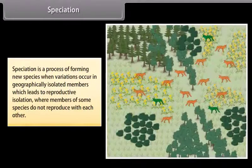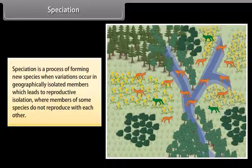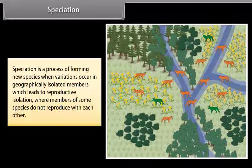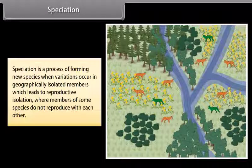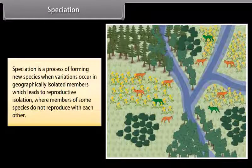Speciation is a process of forming new species when variations occur in geographically isolated members which leads to reproductive isolation where members of some species do not reproduce with each other.